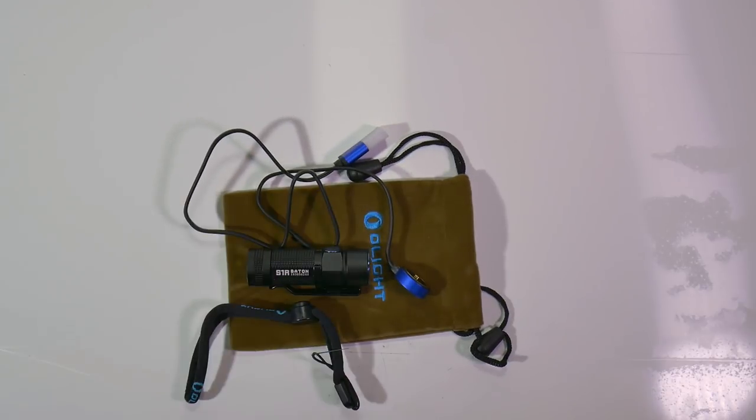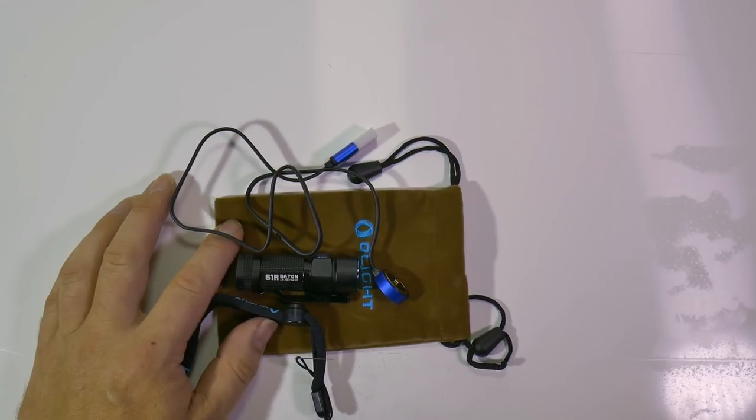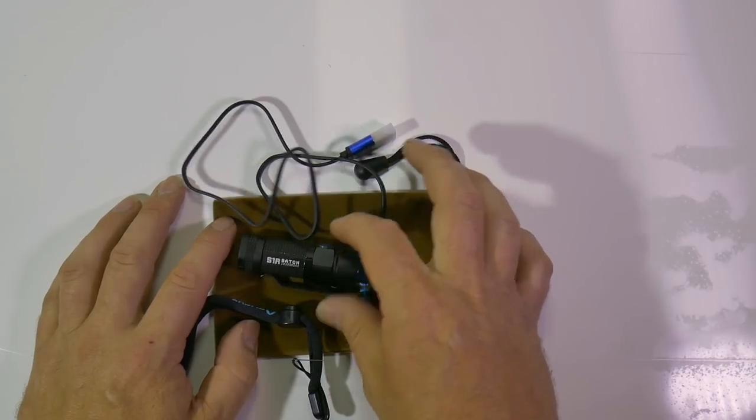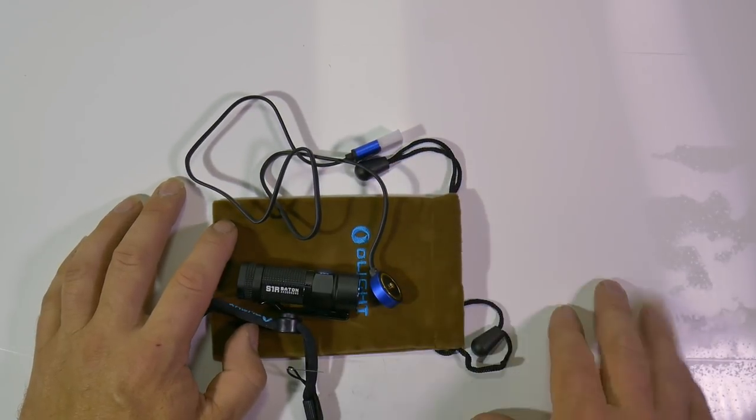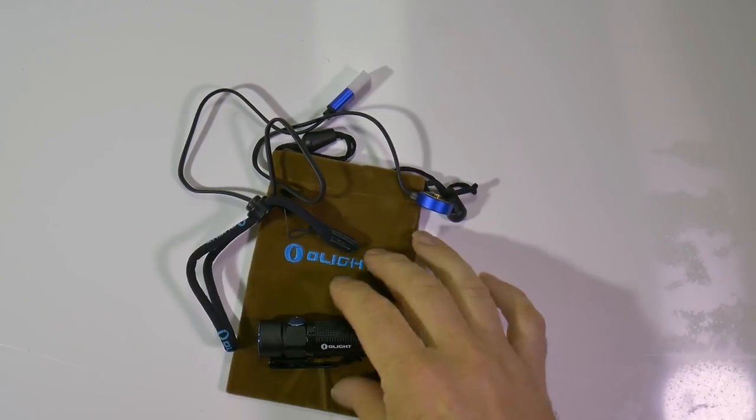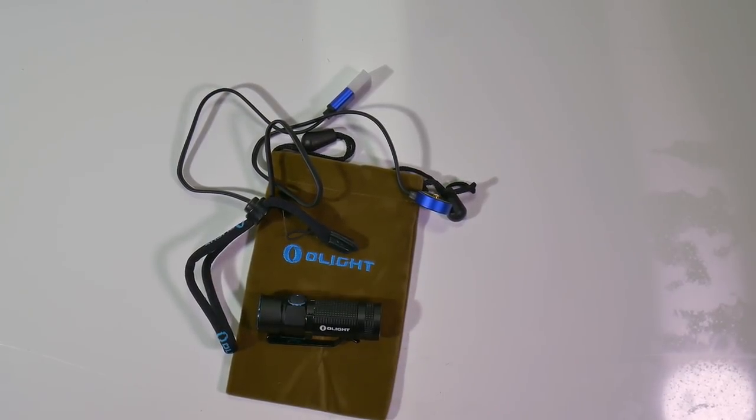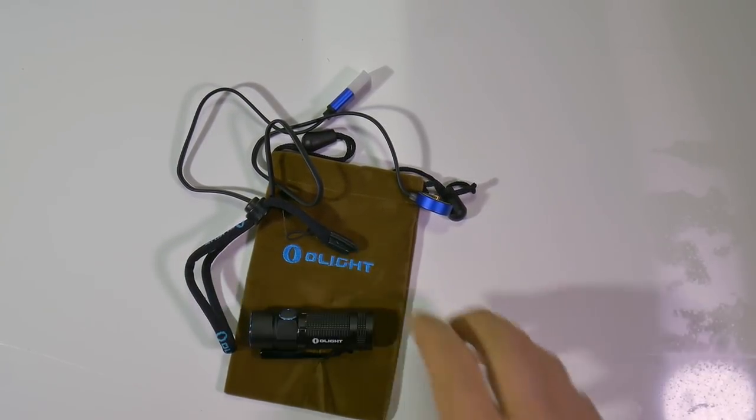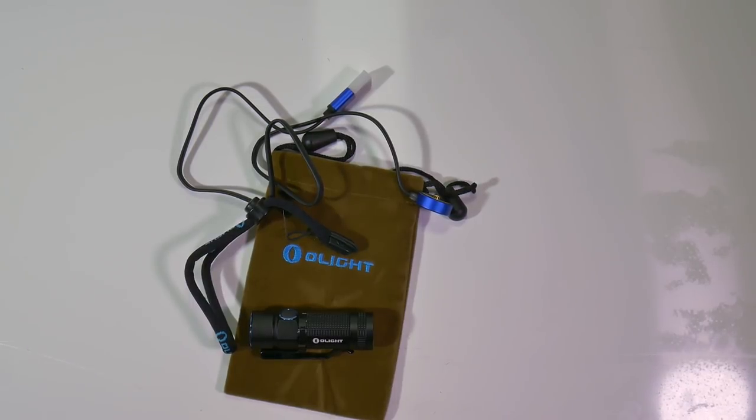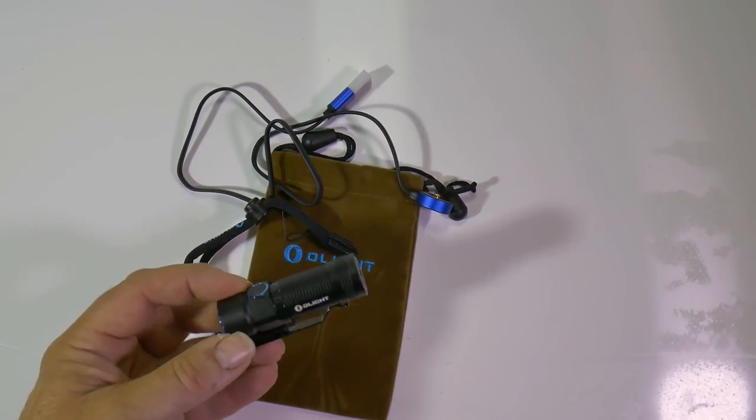I guess you could buy another battery as well so that you could charge up one and have one in the torch, so then you've got a couple of batteries spare, which would probably be a good idea. So I may do that myself. If you want to get yourself one of these fantastic little lights, the link is in the description down below.